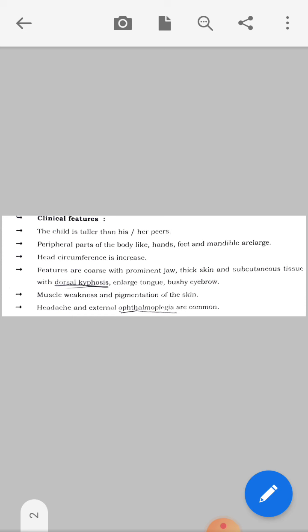Features are coarse with prominent jaw, thick skin and subcutaneous tissue with dorsal kyphosis, enlarged tongue, bushy eyebrow. There are prominent jaw, thick skin, weak or over-stretched muscles in upper thoracic area, enlarged tongue and bushy eyebrow. Muscle weakness and pigmentation of the skin. Headache and external ophthalmoplegia are common due to paralysis of eye muscles.